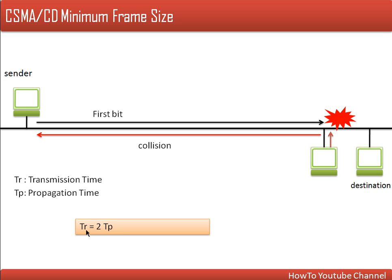The frame size must be such that when the sender starts sending that frame, it takes time equivalent to at least two times the propagation time. This formula — transmission time ≥ 2×propagation time — is the basis for the minimum frame size used in CSMA/CD.